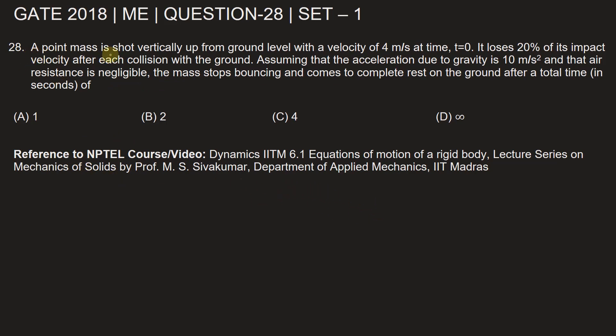In the problem, it's given a point mass and it is shot vertically up. Let u be the initial velocity of this ball and initially this ball is on the ground. It is shot from ground level and the value of u is 4 meters per second.